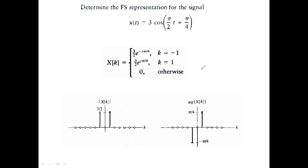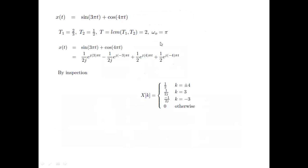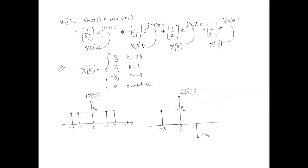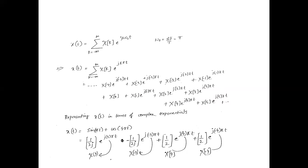This next problem also has two frequencies, rightly indicated by impulses — one impulse at k = 3 and one at k = -3, one at k = 4 and one at k = -4, of course with different magnitudes. That was about the Fourier series; enough problems have been solved.